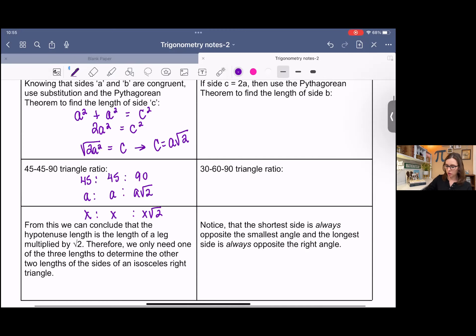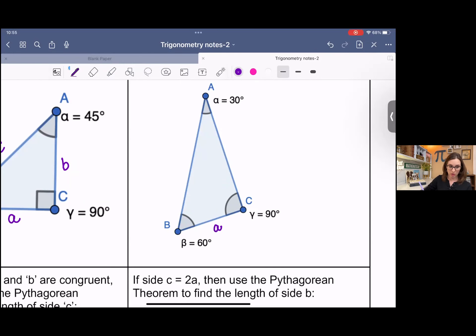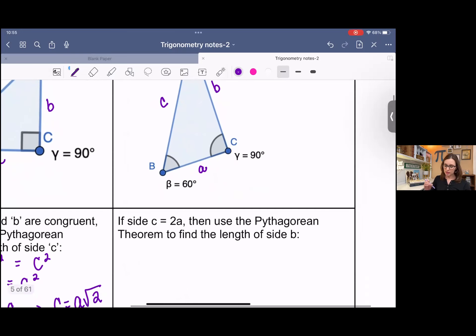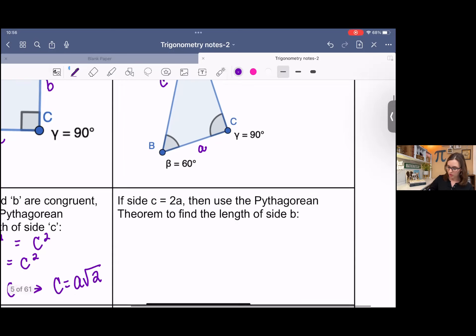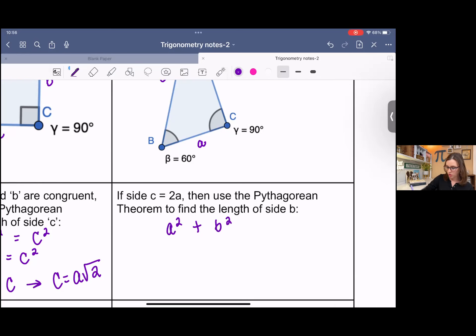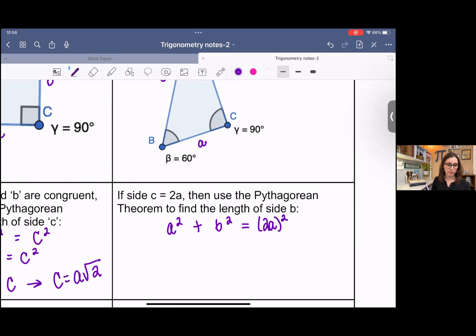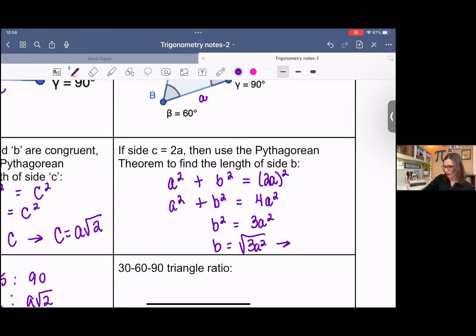Now we're going to look at a 30-60-90 triangle. I'm going to label this again. So side A because it's across from angle A, side B because it's across from angle B, side C. If side C equals 2 times side A, then we can use the Pythagorean theorem to solve for B. So A squared plus B squared equals C squared, but C is 2A. Then I'm going to simplify A squared plus B squared equals 4A squared. You square the 2, square the A. Subtract A squared to the other side. Take the square root. Simplify A comes out, 3 stays under.